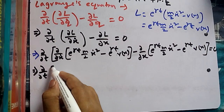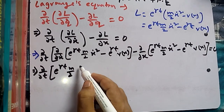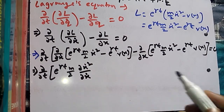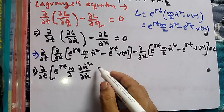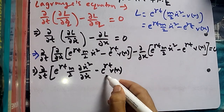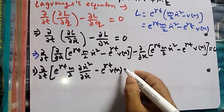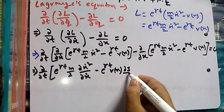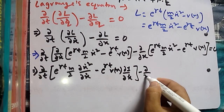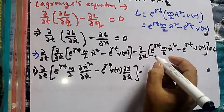From the first term, d/dt of ∂/∂x-dot of [e^(gamma t) times m/2 times x-dot squared], we take the partial derivative with respect to x-dot. The factor e^(gamma t) times m/2 is constant with respect to x-dot, so we differentiate x-dot squared with respect to x-dot, giving 2x-dot. The second term, e^(gamma t) times V(x), is constant with respect to x-dot.